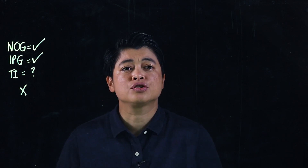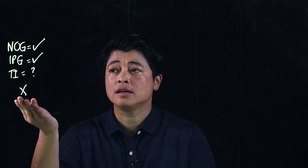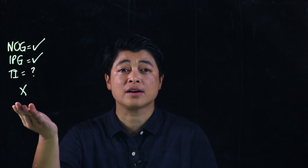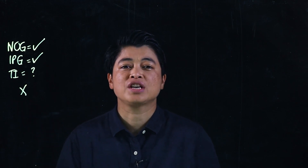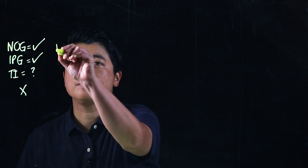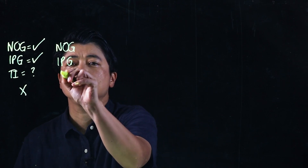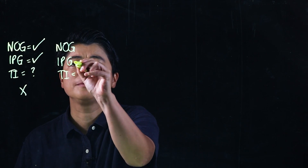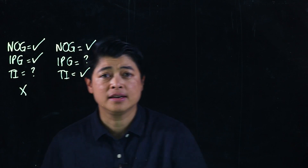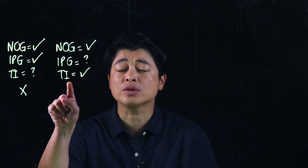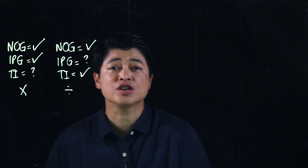It will help them in the next chapters. So: number of groups, items per group, and total items — if total items is given and the others have a question mark, then this will now be a division problem.